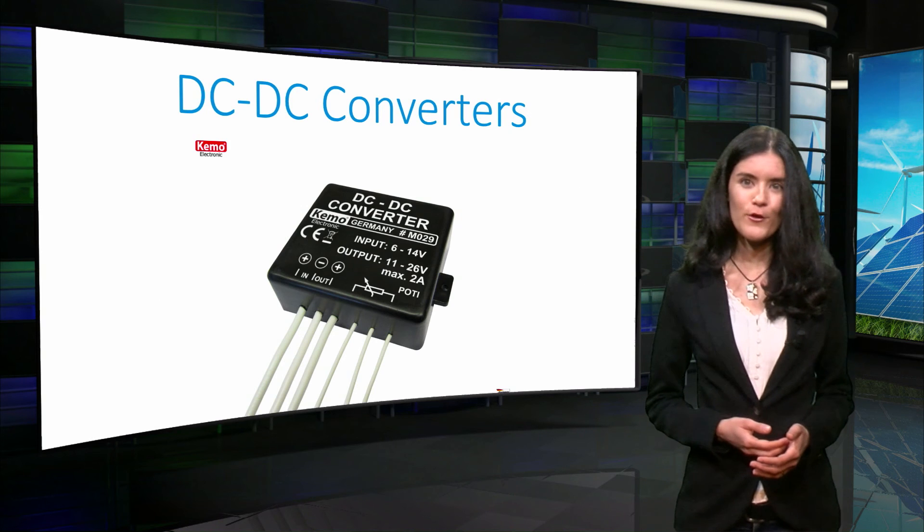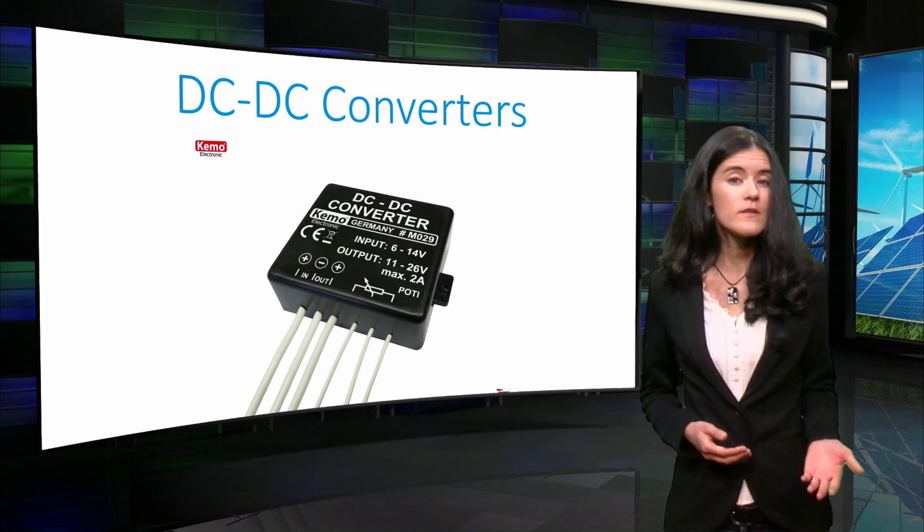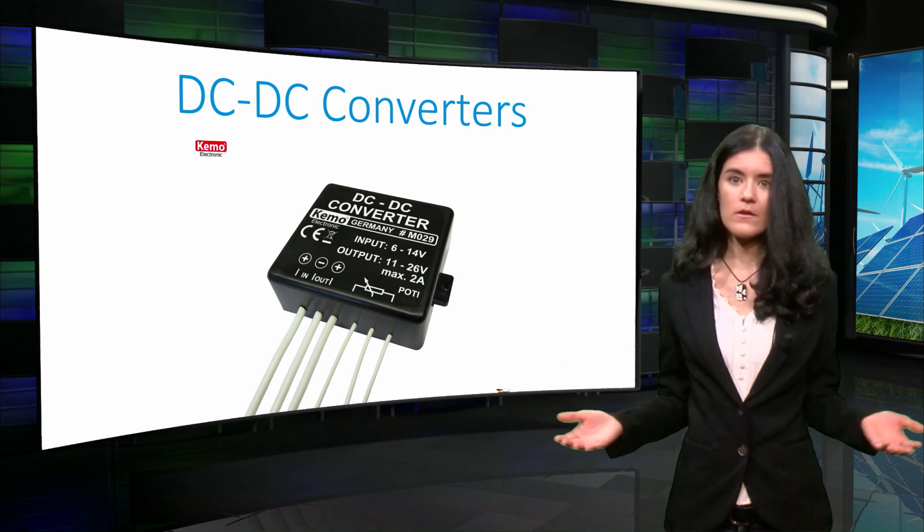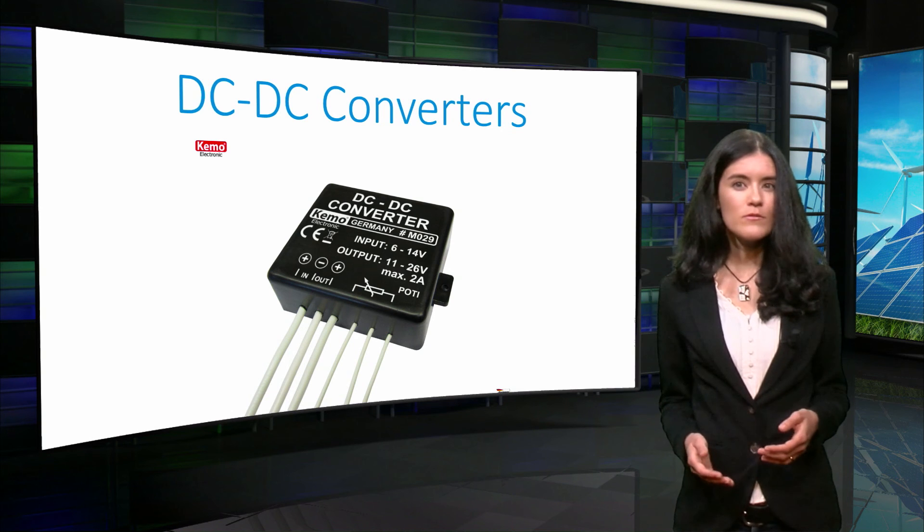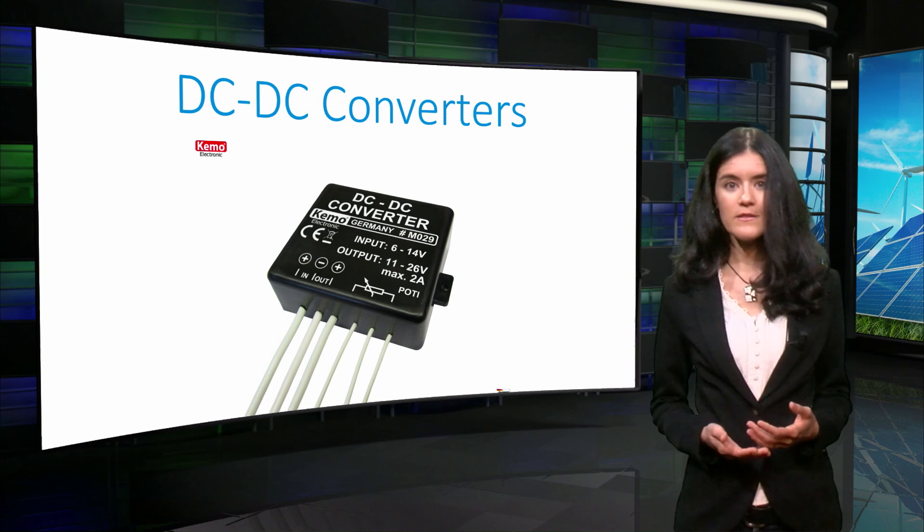A DC-DC converter can be used, not only in the case of increasing or decreasing the voltage for high voltage transmission, but also for many other applications. For example, it can be used to control the speed of a DC motor for which a DC supply is available.